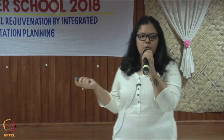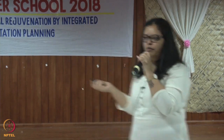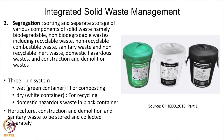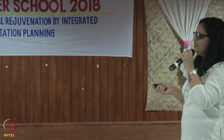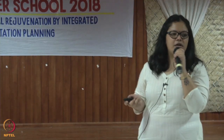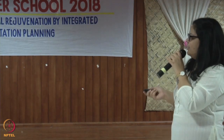Regarding segregation — there is a three-bin system for wet, dry, and domestic hazardous waste, which is collected in a black container. Most of the bigger cities have started to adopt this model of segregation.